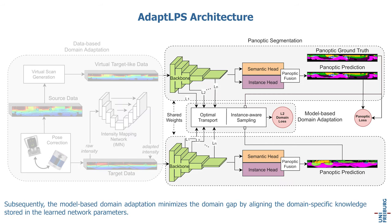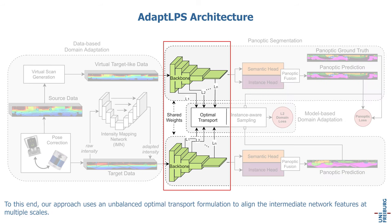Subsequently, the model-based domain adaptation minimizes the domain gap by aligning domain-specific knowledge stored in the learned network parameters. To this end, our approach uses an unbalanced optimal transport formulation to align the intermediate network features at multiple scales.